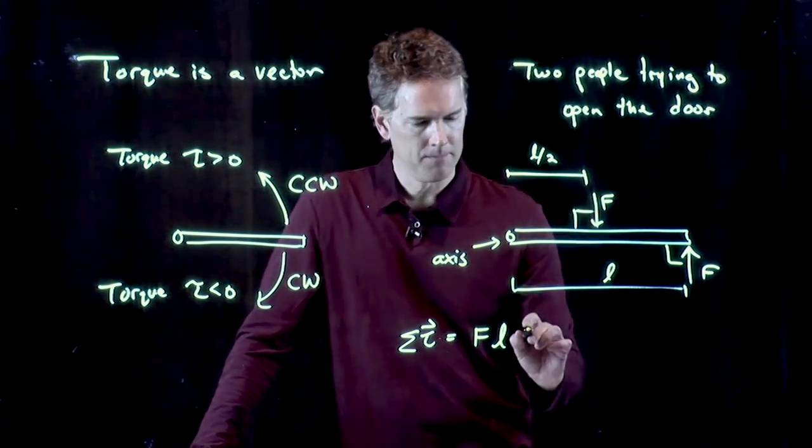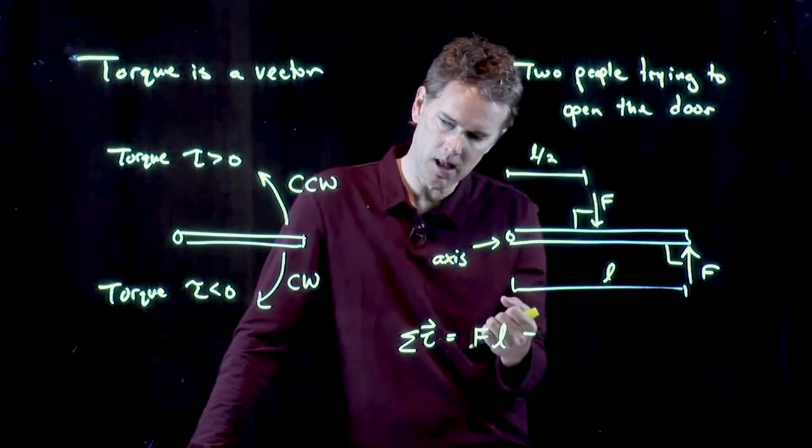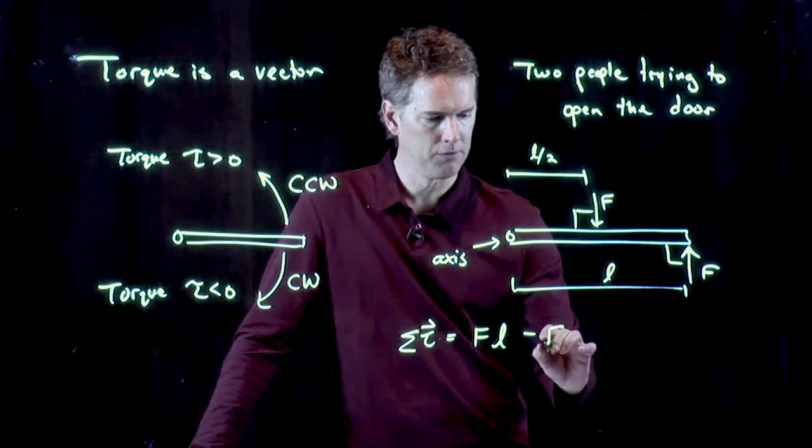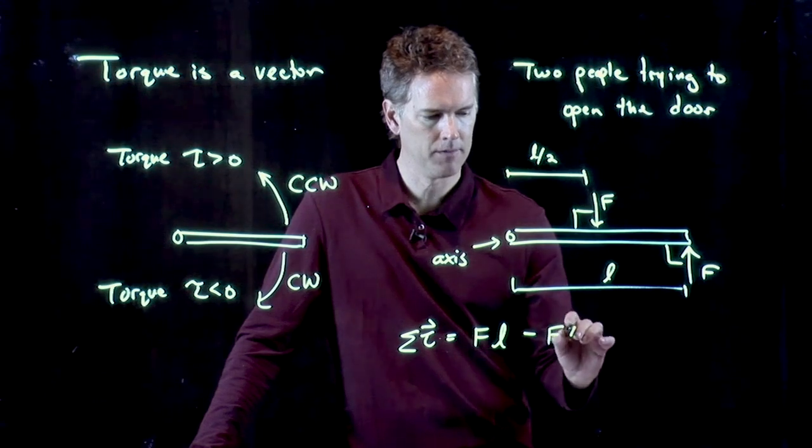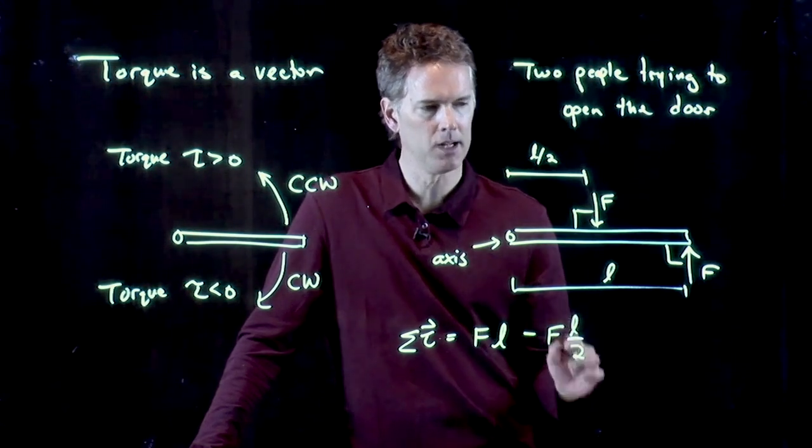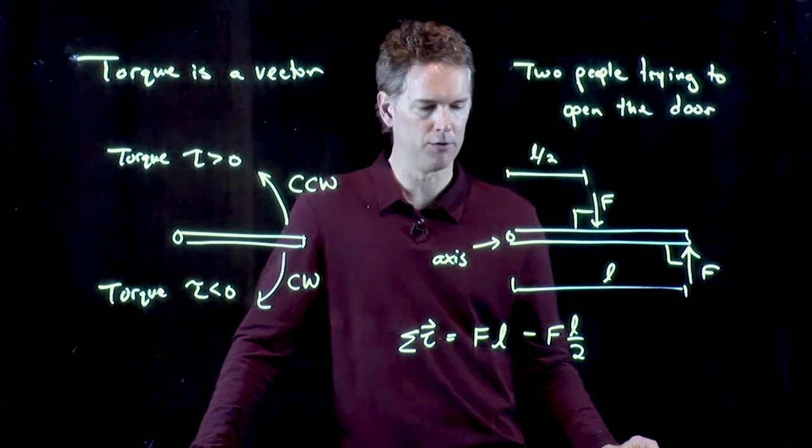What about the other guy? The other guy is trying to rotate it clockwise, and so we put a negative sign in front of it. Its lever arm is halfway down the length of the door, and so it's L over 2.